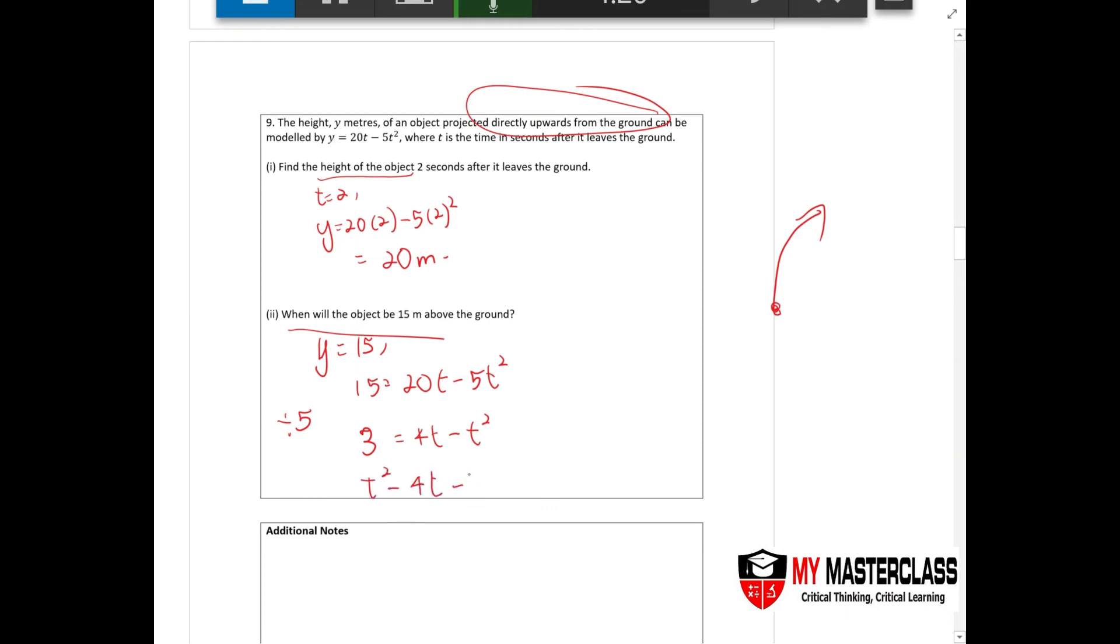Then factorize this. You should be getting t minus 3, t minus 1 equals to 0, whereas t equals 3 or t equals to 1.